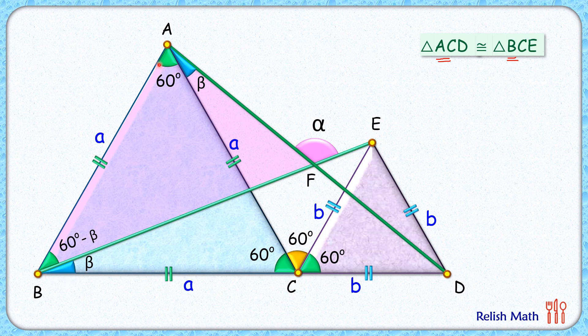So it will equal angle B plus angle A, or 60 minus beta plus 60 plus beta. So here beta degrees will cancel out, and we'll get alpha as 120 degrees, and that's our answer.